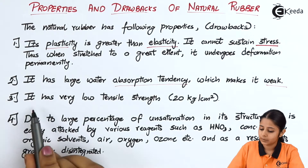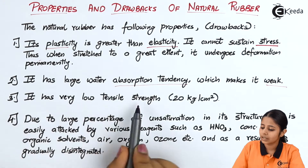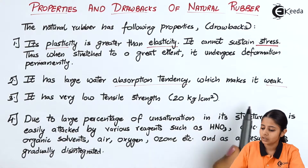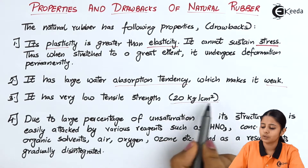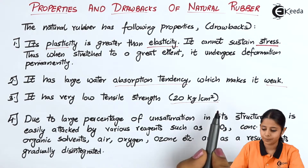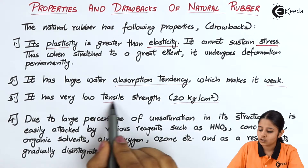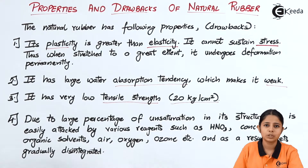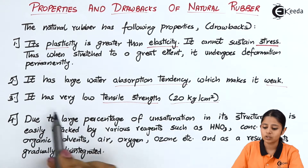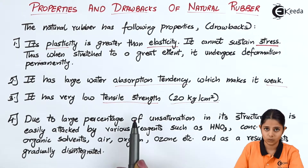Point number three: natural rubber has very low tensile strength, up to only 20 kg per centimeter square. The tensile strength of all elastic materials should generally be higher, but for natural rubber it is very low.